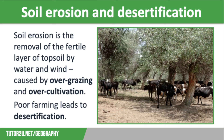Overgrazing also occurs. This is where too many animals are grazed on marginal land, which trample the land and eat all the vegetation, leaving nothing to bind the soil together. Once animals have exhausted the land, farmers will move their herds elsewhere for the process to repeat again. These poor farming techniques, along with drought, over time will lead to desertification.